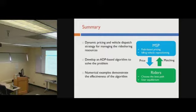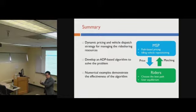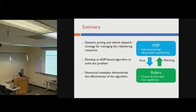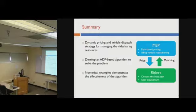To summarize, we designed a path-based pricing strategy with vehicle dispatch decisions to better manage ride sharing resources, especially when dealing with the imbalance between travel demand and supply. Using the ADP-based algorithm, we demonstrate that this strategy is very effective in addressing these issues. However, this type of path-based pricing strategy has not yet been implemented in the real world — right now Uber and Lyft are not offering different path options — so we are looking forward to testing whether this strategy works better.